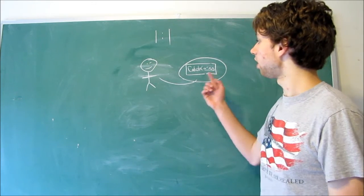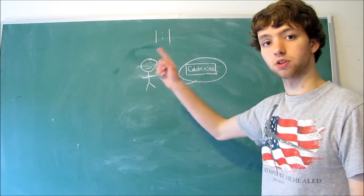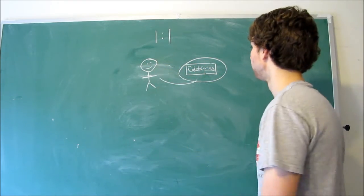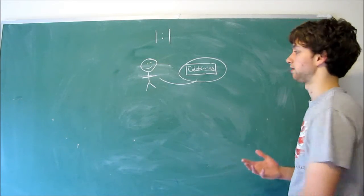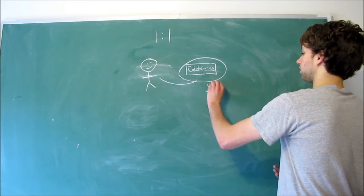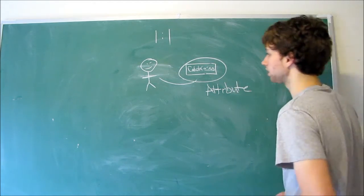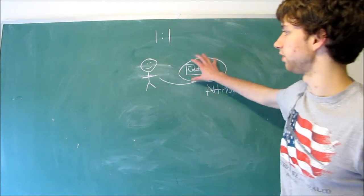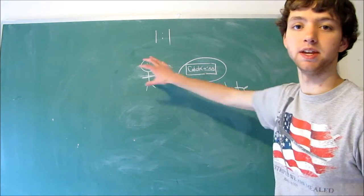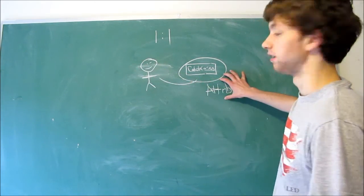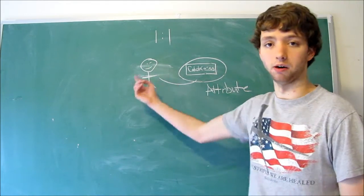So that means we can often store one-to-one relationships as attributes rather than entities. Rather than his username being an entity, it's an attribute. Just think of it as: it's exclusively his, so it describes him. What is this guy's username? It's Caleb Curry. It's an attribute of that person.